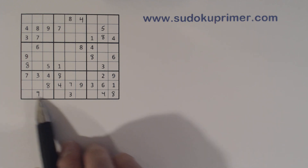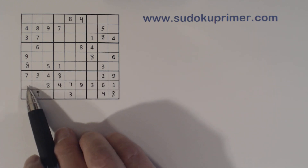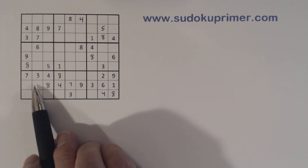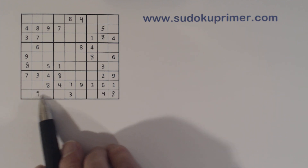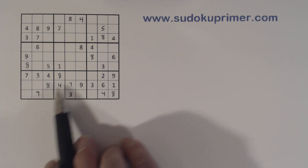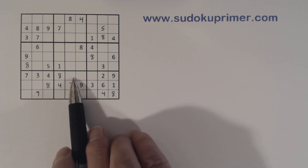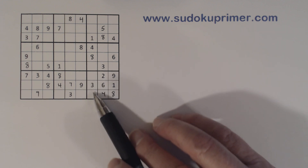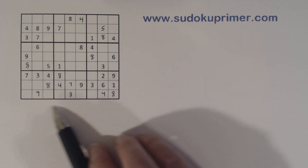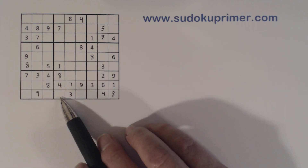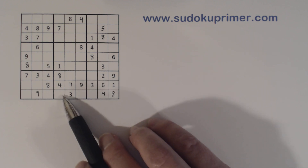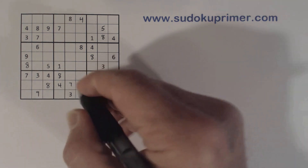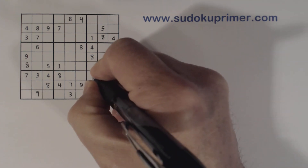Now let's look at this bottom section. We've got a bunch of twins, and we can only solve one of them. We've got 2-5 twins there, 1-6 twins, 1-6 there, 2-5 there, and 5-7 here. We can solve this one because we know these are 2-5 twins — therefore the ghost 5 is here, so we know that's a 7 and that's a 5.